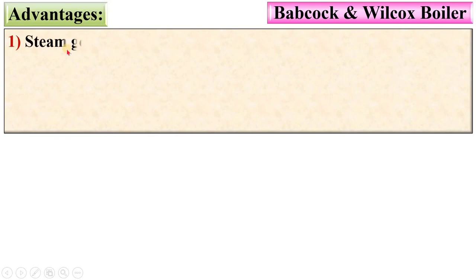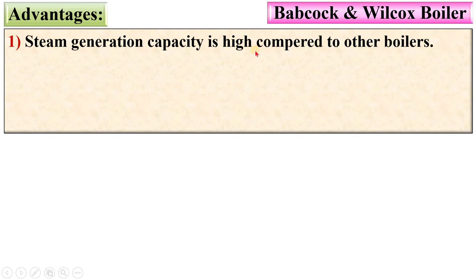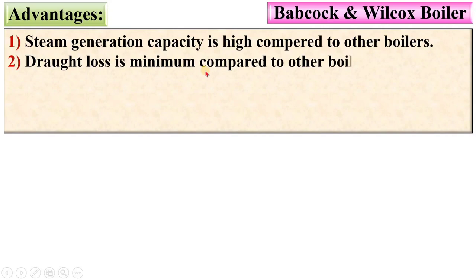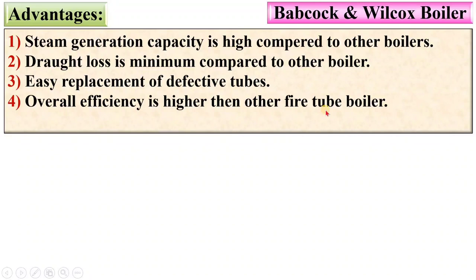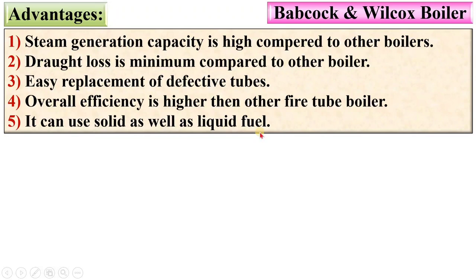Now the advantages of the Babcock and Wilcox boiler. Steam generation capacity is high compared to other boilers — in the case of the Cochran boiler, it is only up to 3,500 kg per hour. Draft loss is minimum compared to other boilers; in other words, there is less pressure drop. There is easy replacement of defective tubes. Overall efficiency is higher than other fire tube boilers. It can use solid as well as liquid fuel.